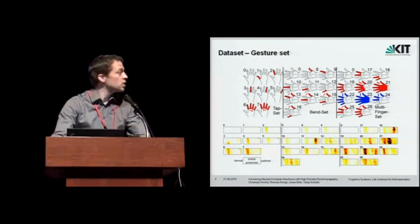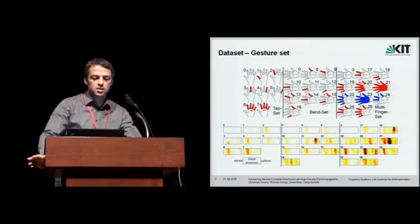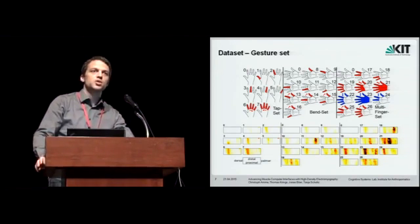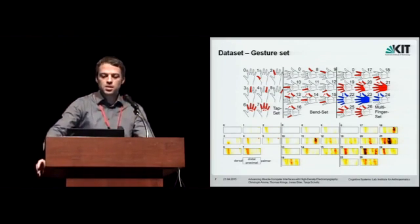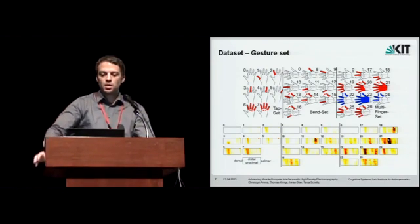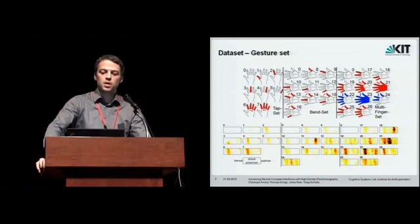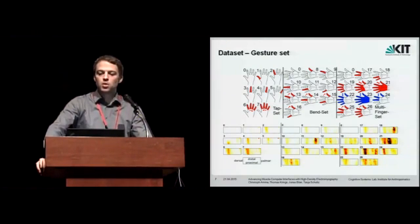So this is the gesture set we used. There are three subsets. The tap set, the bend set, and the multi-finger set. The tap set consists of tapping gestures. Hand lying flat on the desk and tapping is done. Then the bend set consists of bending each finger and also pinching against the thumb. And the multi-finger set has various gestures involving multiple fingers, also sometimes only discriminated in the amount of force you apply.